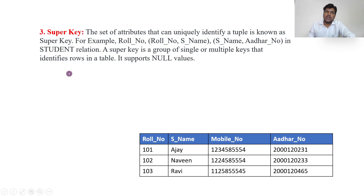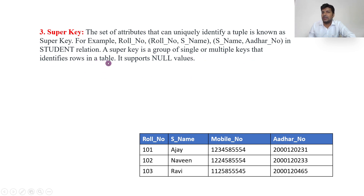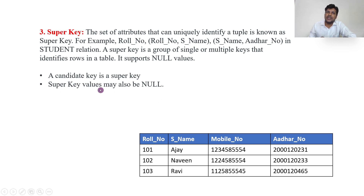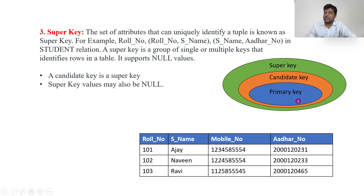Super key: a set of attributes that can uniquely identify a tuple is known as a super key. A super key is a group of single or multiple keys that identifies a row in a table. It can support null values. For example, roll number alone, or roll number combined with name, or roll number combined with mobile number — these combinations are all super keys. A candidate key is always a super key, as shown in the diagram. Primary key is a candidate key, and candidate key is a super key, so automatically primary key is also a super key.